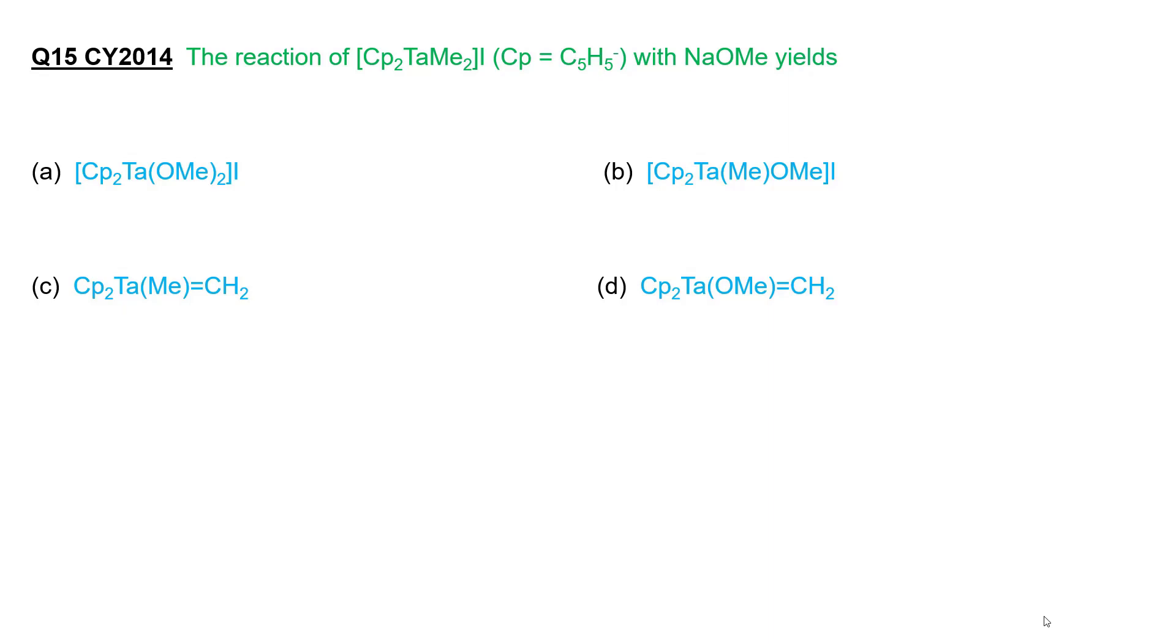Question number 15, CY 2014: The reaction of Cp2TaMe2I, where Cp equals C5H5-, with sodium methoxide yields which product?